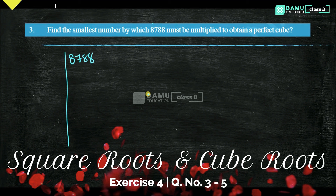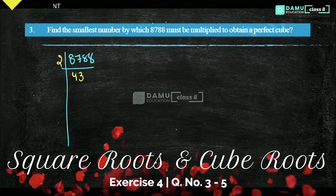Go with 2. So 2 fours are 8, then 2 threes are 6, then 2 nines are 18. That gives us 18.